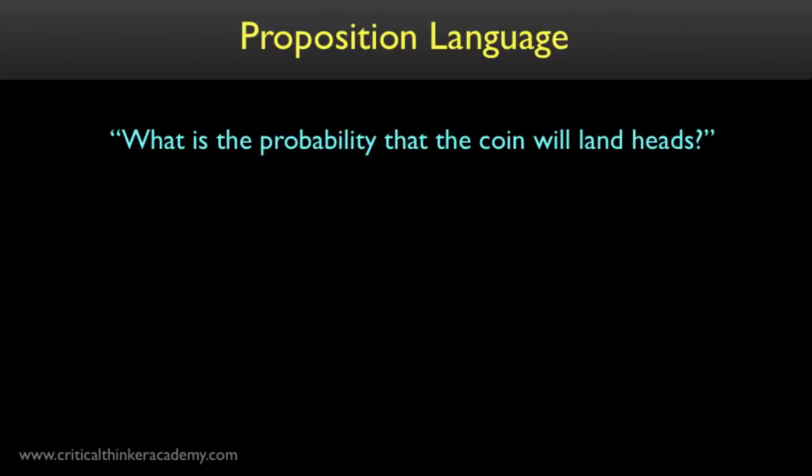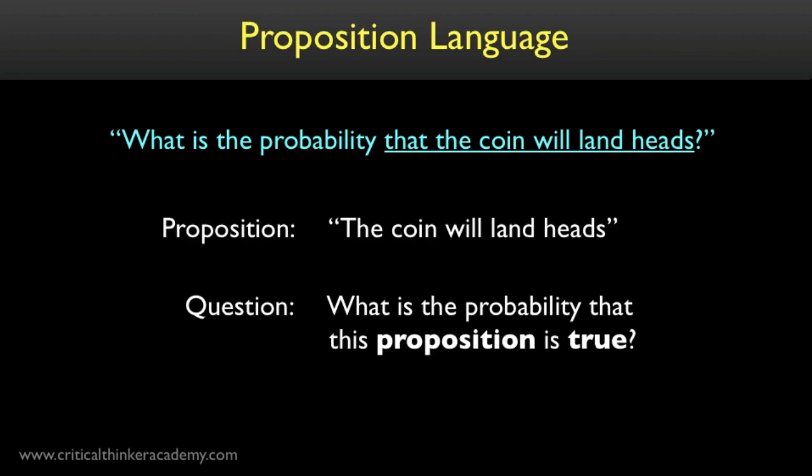Let's say I toss a coin and I ask, what's the probability that the coin will land heads? Grammatically, what I'm attributing the probability to is this statement, that the coin will land heads. And the question we're asking is, what is the probability that this proposition, this statement, is true? When we say that the probability of heads is 0.5, we're using the language of propositions. We're interpreting H as the proposition that the coin will land heads, and we read the answer as saying that it's 50% likely that this proposition is true.